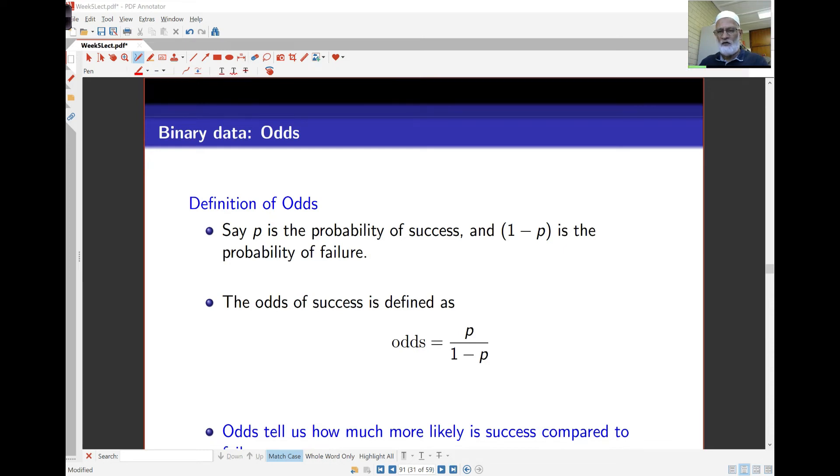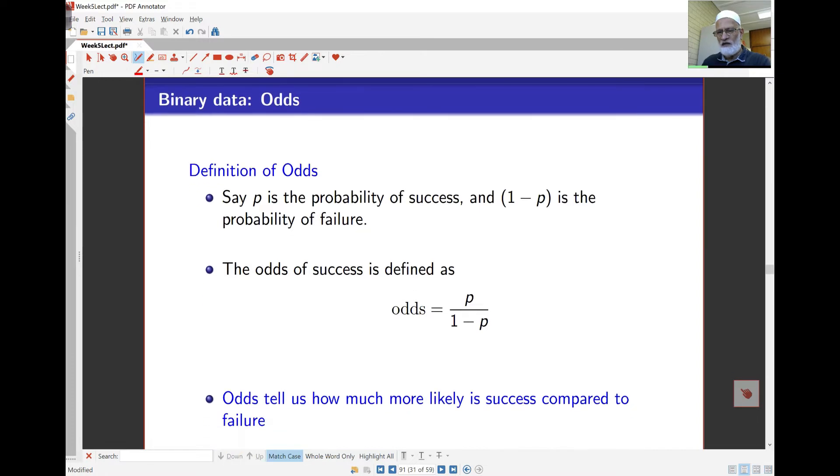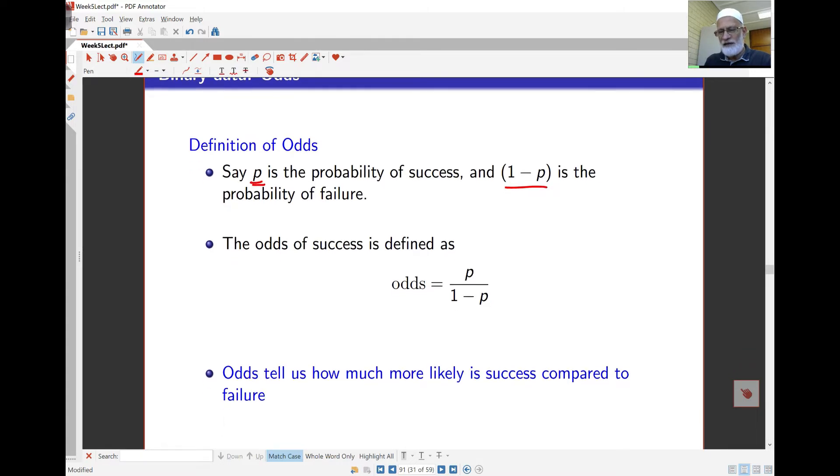Let's now look at this idea of odds and odds ratio. If you have an event that has probability of success as p, then probability of failure is 1 minus p. The ratio p over 1 minus p is defined as the odds ratio. This tells us how much more likely the event is to occur, in other words, how much more likely success is compared with failure.